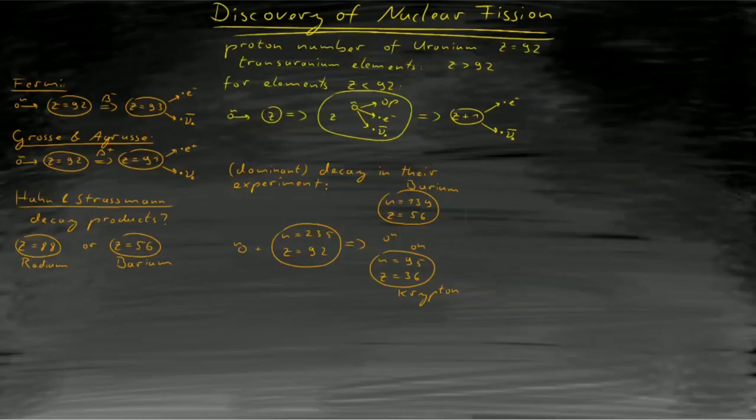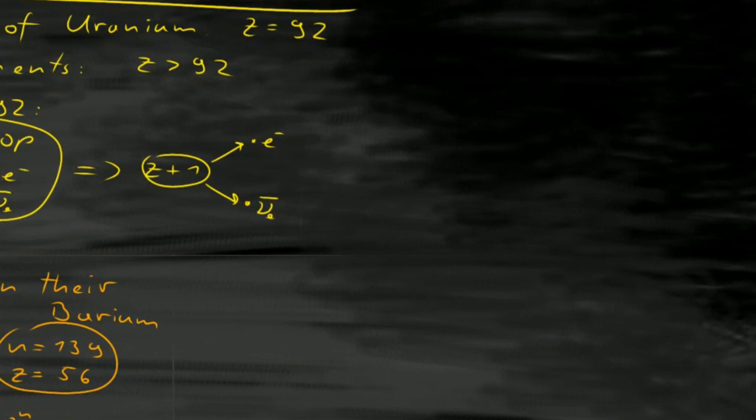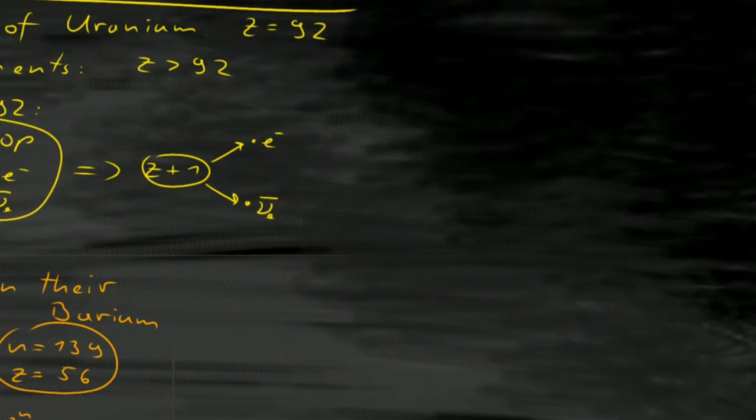They told Meitner, who was by then in exile, about the result, and she and her nephew Otto Frisch used Weizsacker's liquid drop model to explain the behavior of the nucleus.